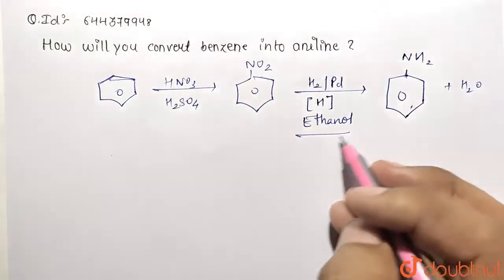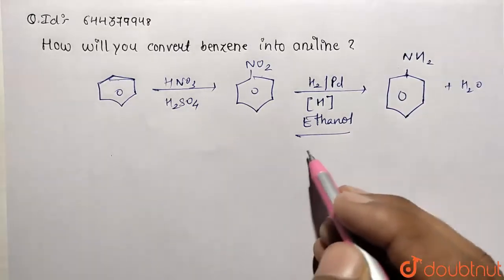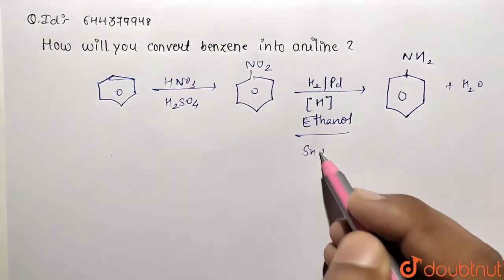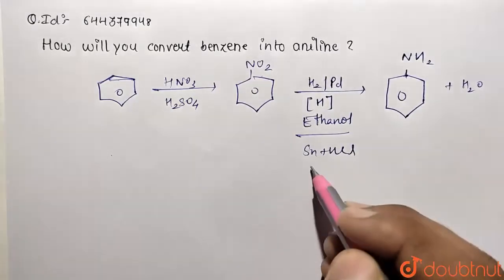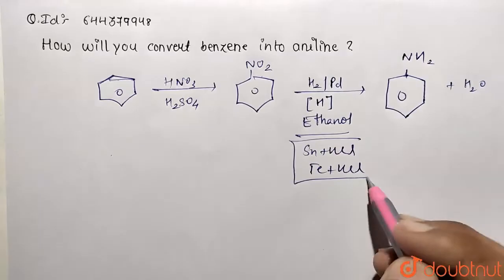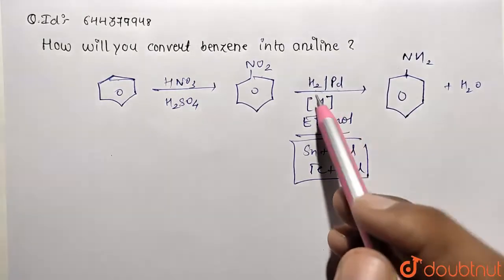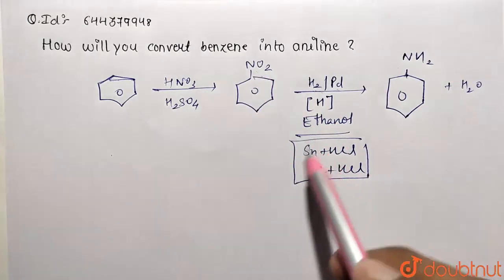So you can use this reagent also, or you may also use the corresponding reagent of our tin and HCl, which is also useful. So tin and HCl you can take, or you can take Fe or SnCl. So all these are going to be reducing in nature.